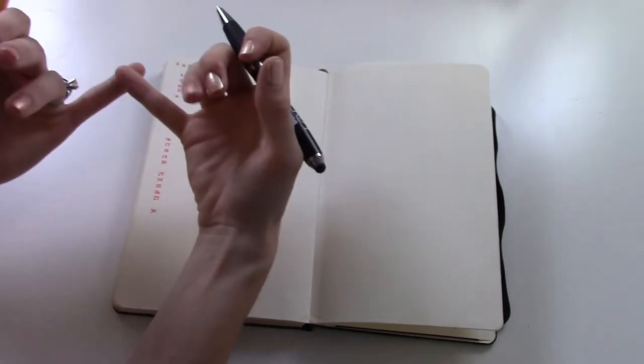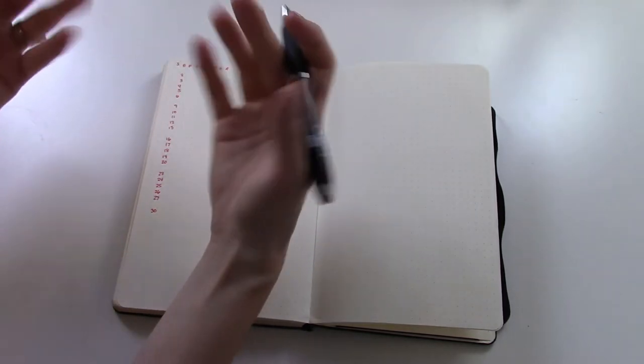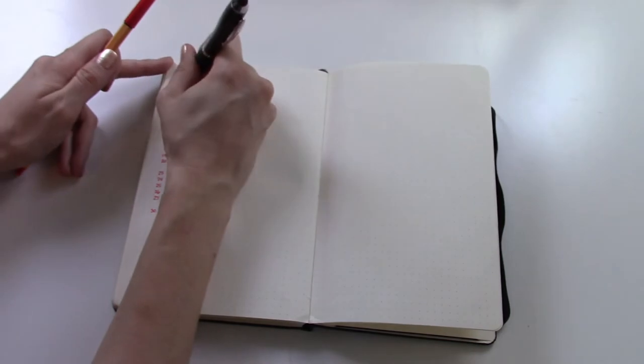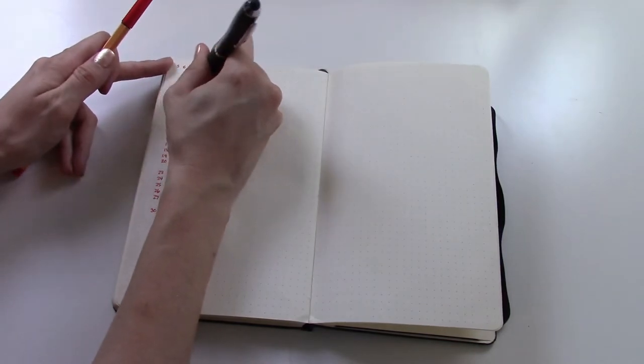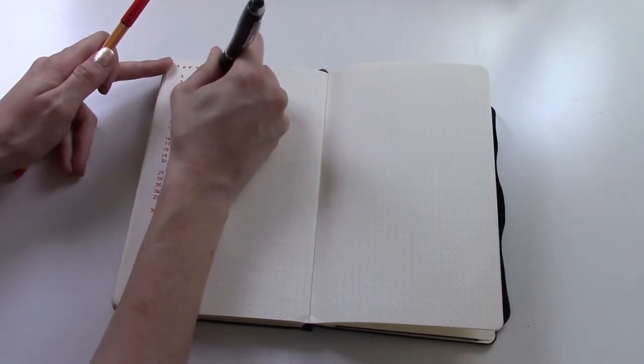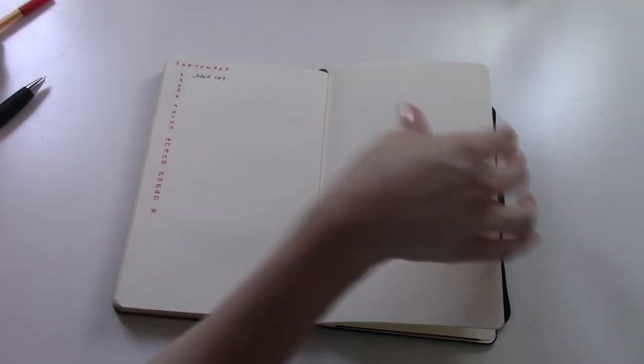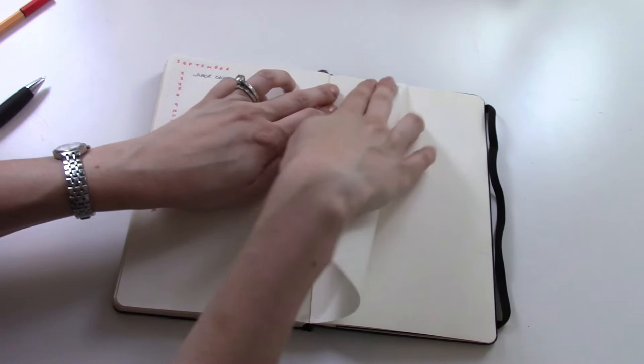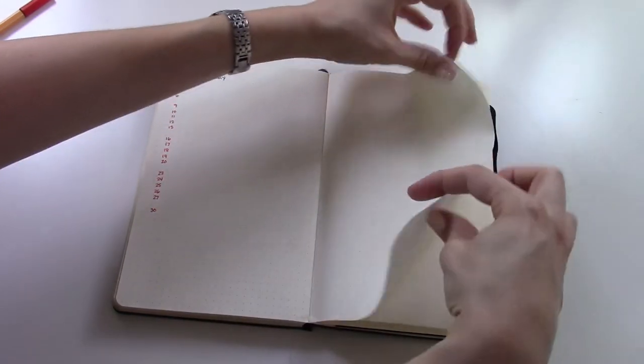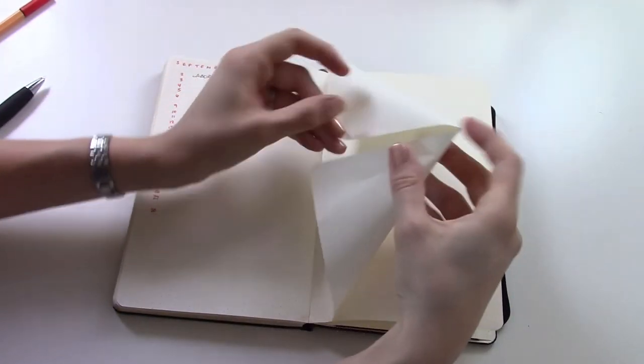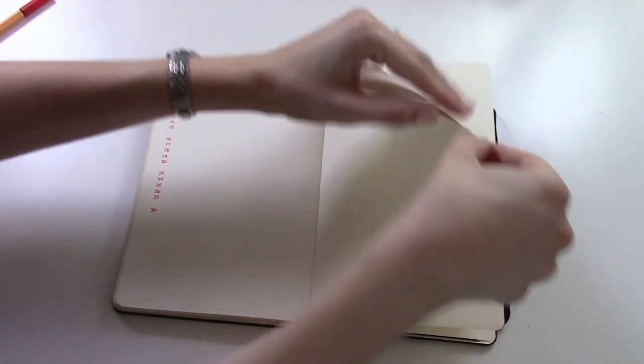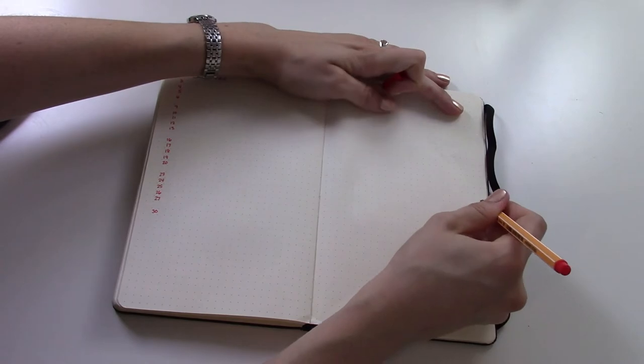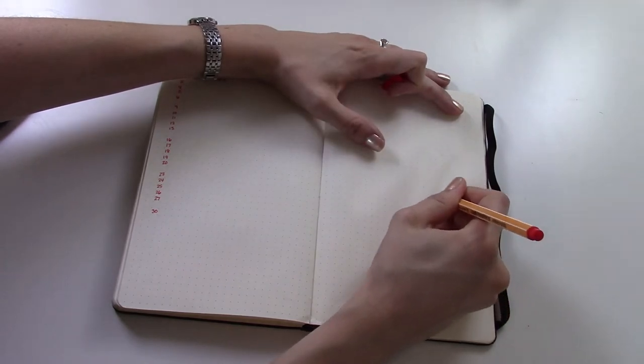Obviously if it's a holiday, that gets marked as well. Then on the other spread here, I kind of fold very lightly, figure out where the middle of the page is, and then break it into four sections.